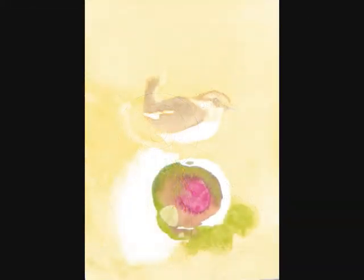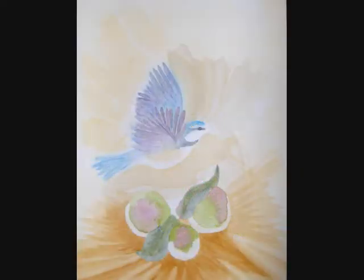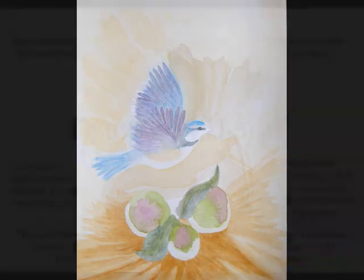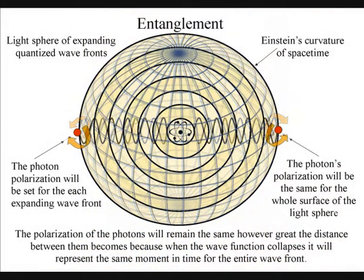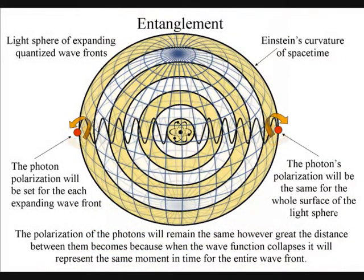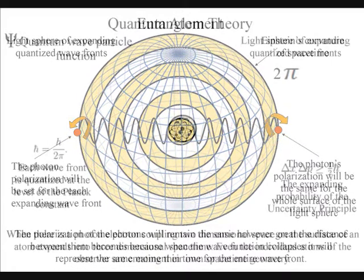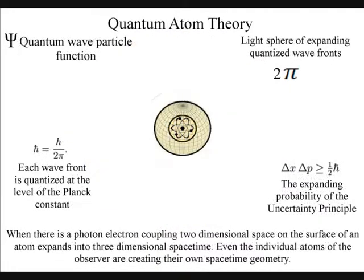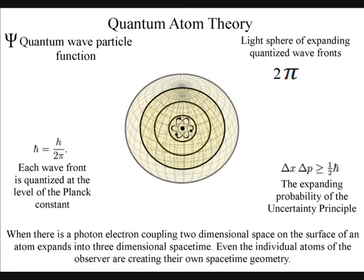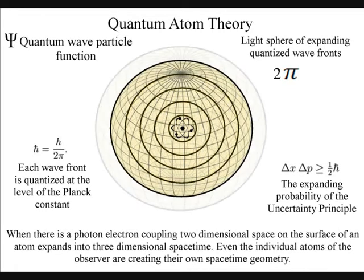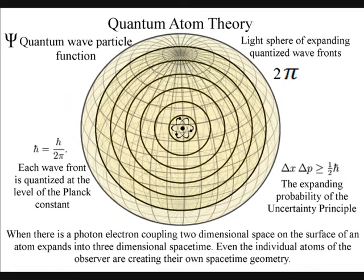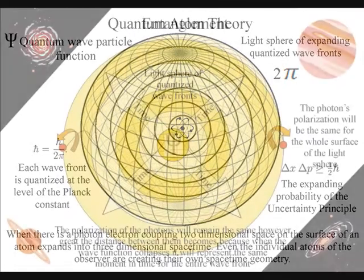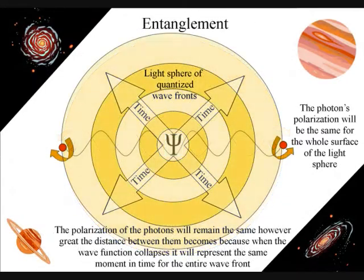This can also explain why light is so beautiful when it strikes an object — it is because we are looking at a moment of pure creation of time and space. We have entanglement because the polarization will be set at the creation of each expanding wave front. The wave front will expand in the form of the light sphere, and the polarization will remain the same for the entire surface of the light sphere, no matter how large it becomes.